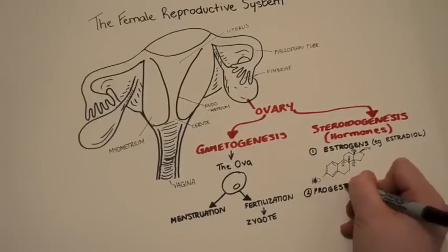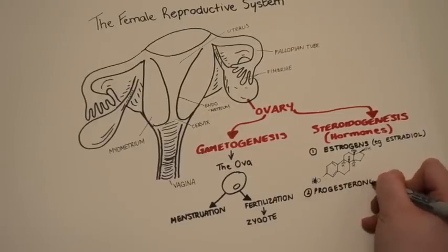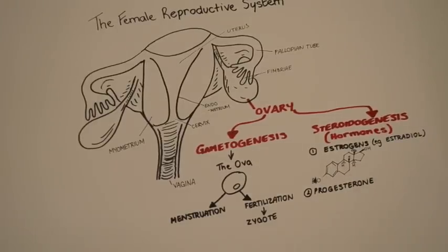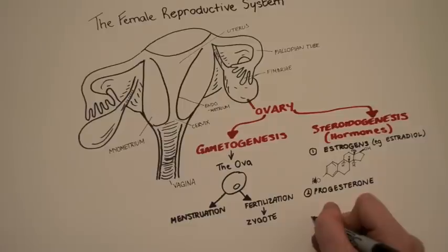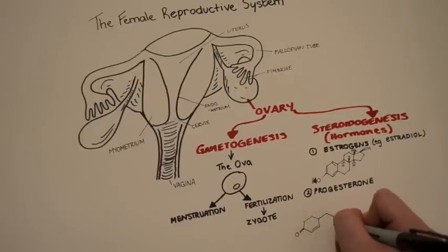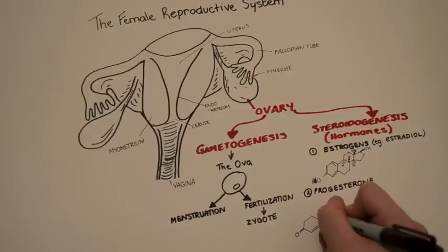The first is estrogen. The ovaries secrete estrogen and progesterone. Estrogen is a secondary sex characteristic developing hormone. It's also responsible for the maturation and the maintenance of the reproductive organs in adults.